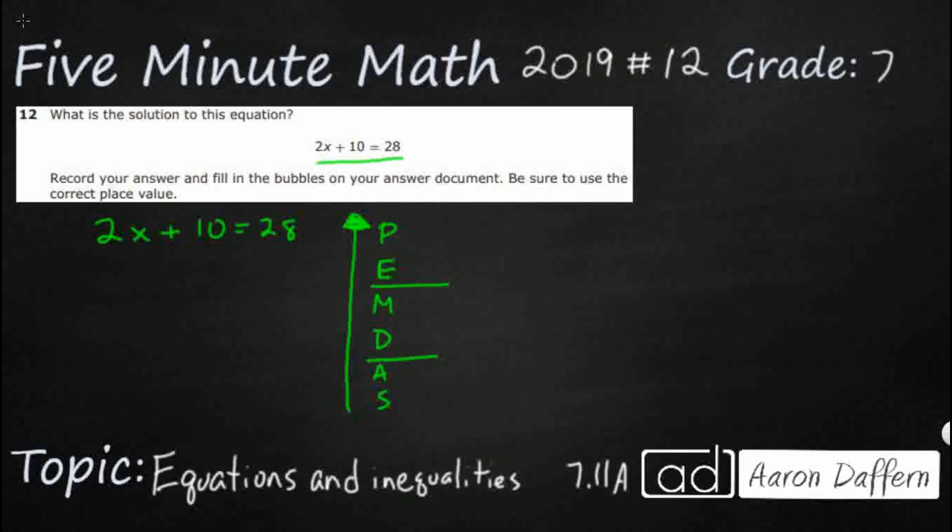You see this plus 10, that's an addition, and I'm trying to get this x all by itself. It's being held on by this addition, this plus 10, and this 2 times x. When you have a number next to a variable or a letter, it's always going to be multiplication. They just don't put the dot there. I've got two to deal with, addition and multiplication. Going from the bottom up, let's deal with this addition first.